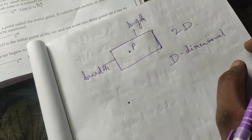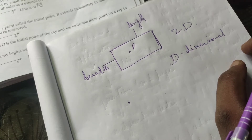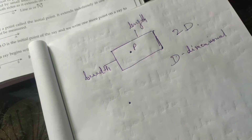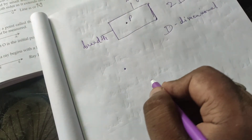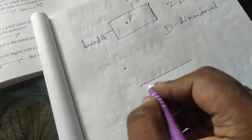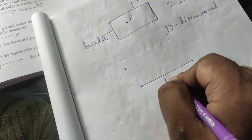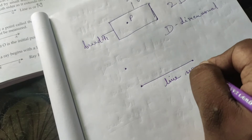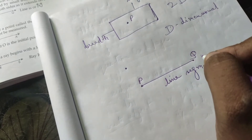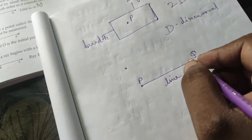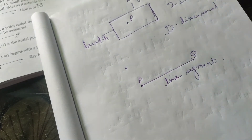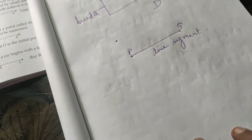A line segment has a definite length. It has two fixed endpoints which name the segment. It is a part of a line. Suppose this is a line with two endpoints — point P and point Q — then this is called a line segment. It has a fixed length and two endpoints.